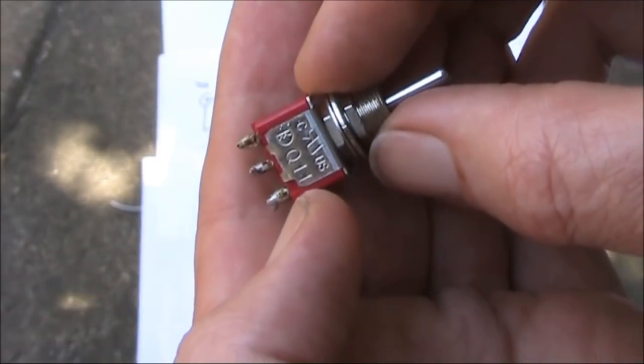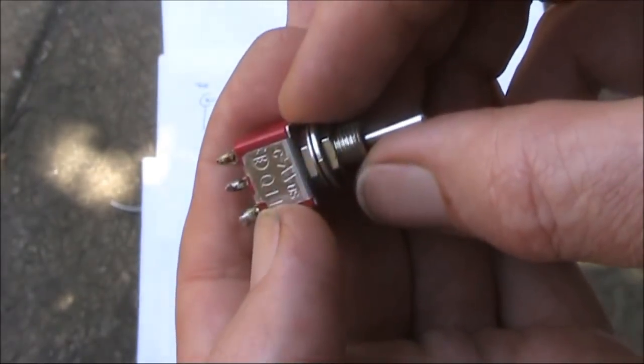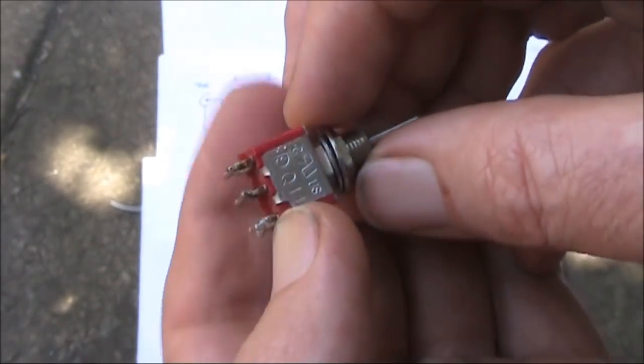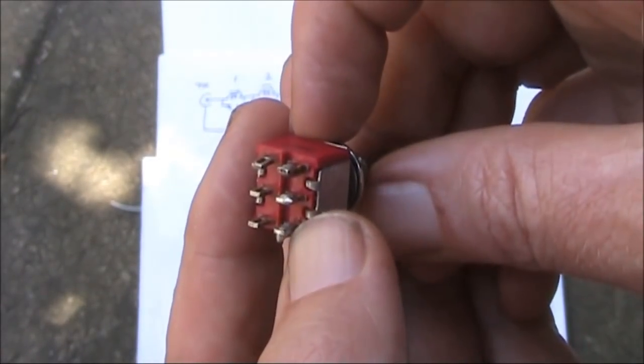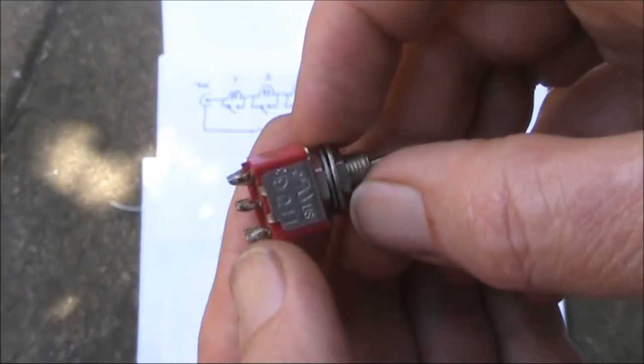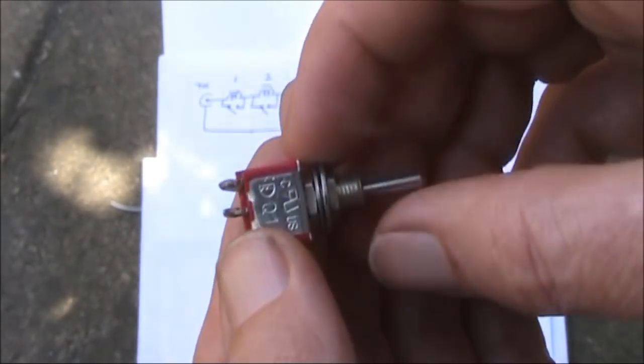That's where a centre off switch comes in. At first sight, it looks like any other double pole, double throw switch. Although, in this application, it doesn't have to be double pole. Just single pole would be okay. But the important thing is the centre off.